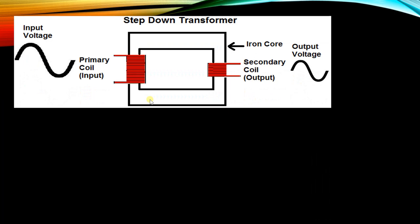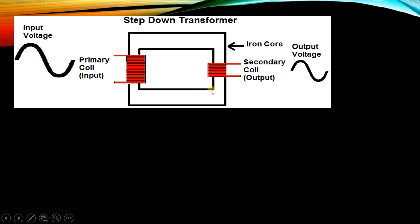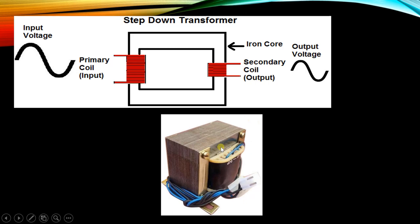This diagram shows the step-down transformer. On the primary side, the number of turns N1 is greater than the number of turns N2 on the secondary side — that is, N1 > N2. The EMF induced in the secondary is lower, so the voltage is reduced, which is why it is called a step-down transformer. The commercial figure of a step-down transformer is also shown.